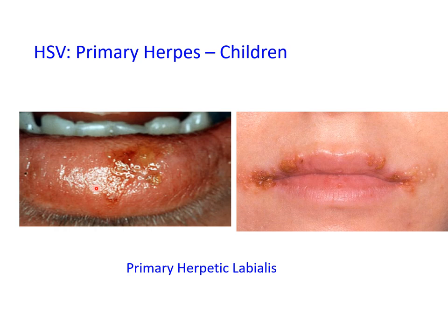Satellite lesions involving the lips and perioral tissues represent what we call primary herpetic labialis — when primary herpes, in addition to gingivostomatitis and intraoral lesions, involves the perioral soft tissues.